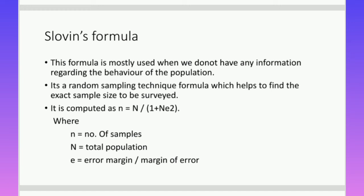Lastly, the third formula is known as Sloven's formula, and it is mostly used when we do not have any kind of information regarding the behavior of the population. That is, if the population is unruly and we do not know anything about its behavior, we basically apply Sloven's formula. It is a random sampling technique formula which helps us find the exact sample size which needs to be surveyed.